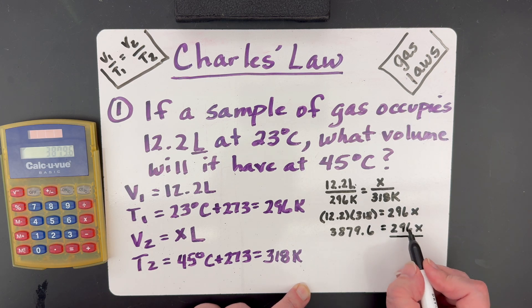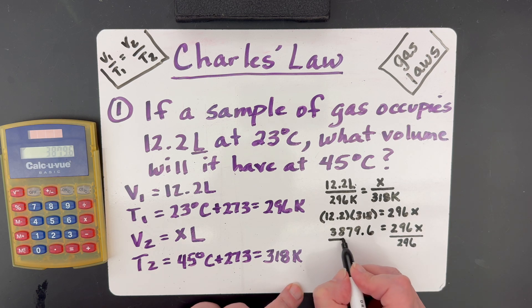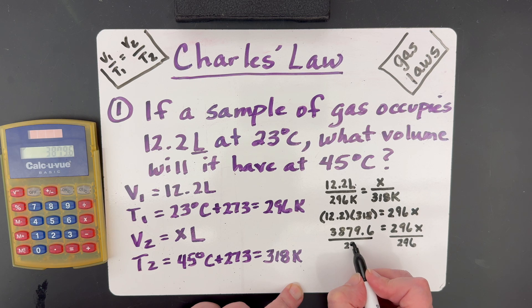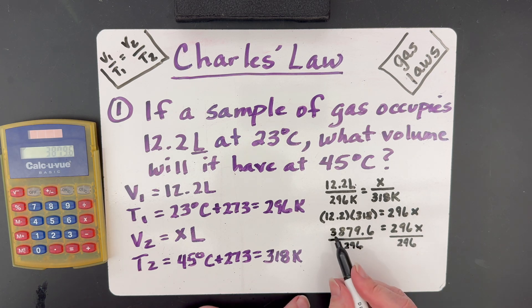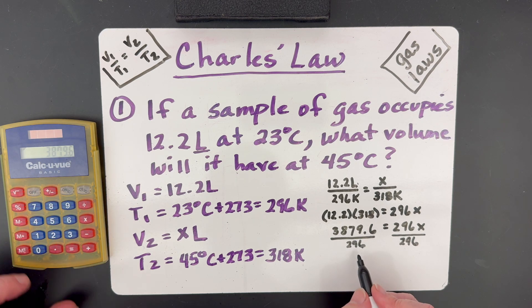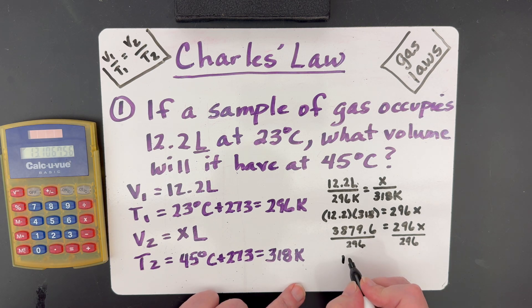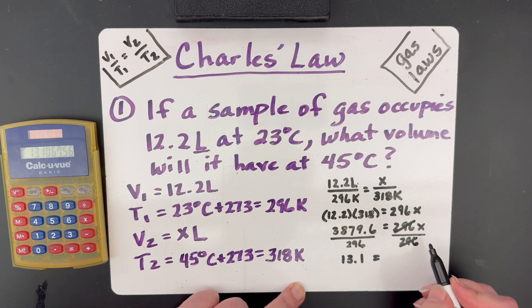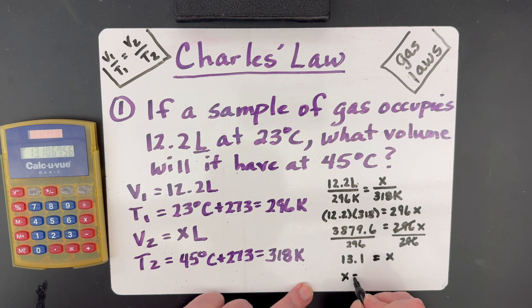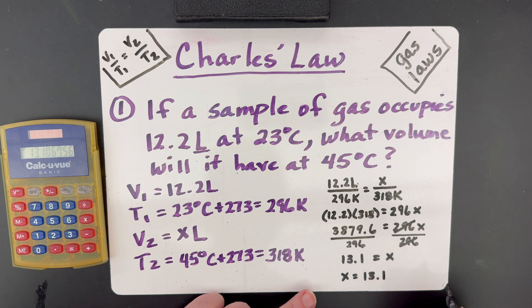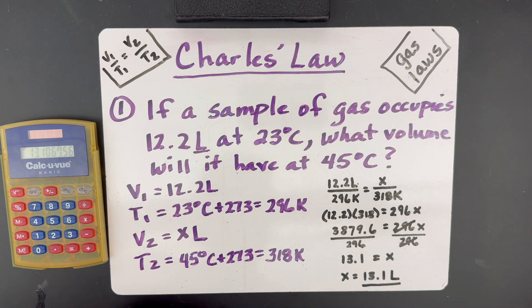Now, since I want to get X by itself, I need to divide. Since this is times, I need to divide by 296. But if I do it to the right to keep it equal, I need to do it to the left. 296. So I'm going to take this number, divide it by 296, and I get 13.1 equals. These two cancel, and the only thing left on that side is X. So our X is equal to 13.1 liters as our final answer.